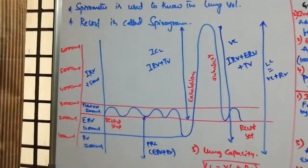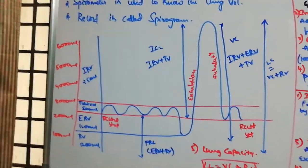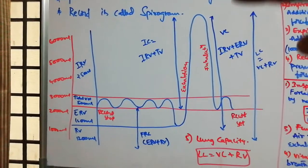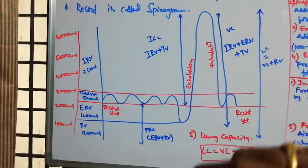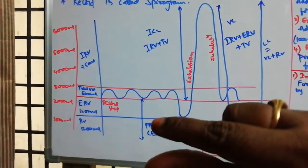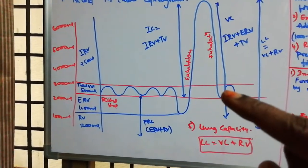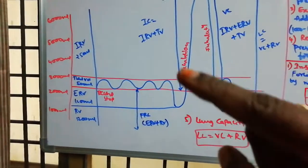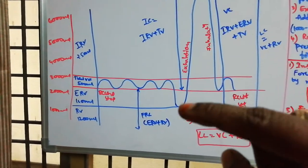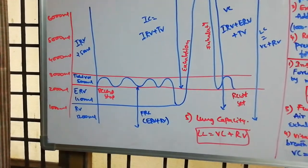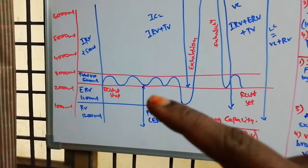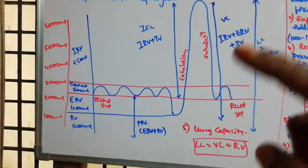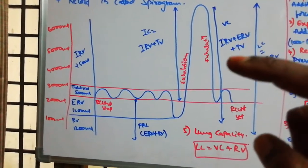In summary, using the graphical representation: TV is tidal volume, IRV is inspiratory reserve volume, ERV is expiratory reserve volume, and RV is the residual volume remaining in the lungs. TV plus IRV gives IC, TV plus ERV gives EC, ERV plus RV gives FRC, and IRV plus ERV plus TV gives vital capacity.